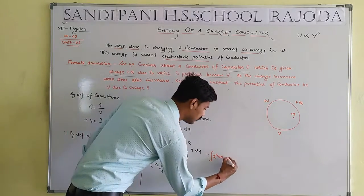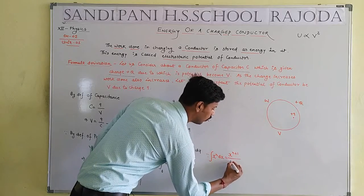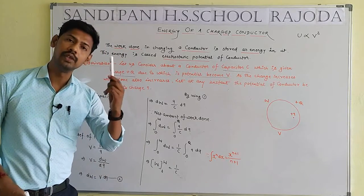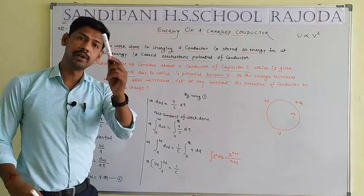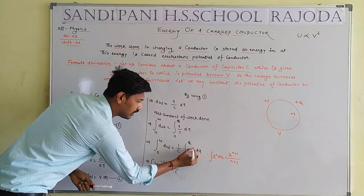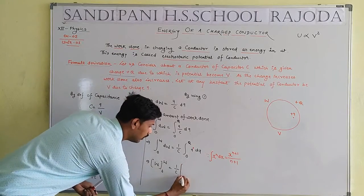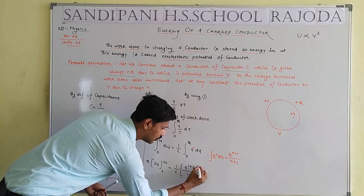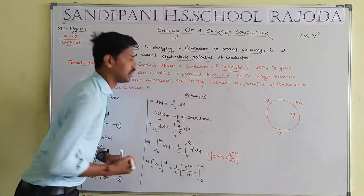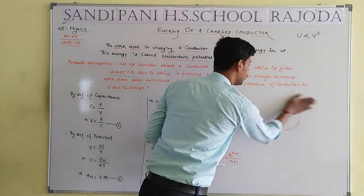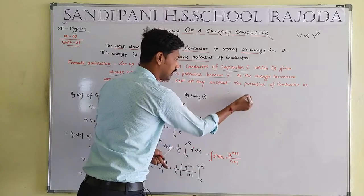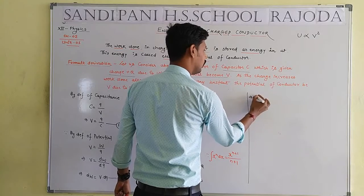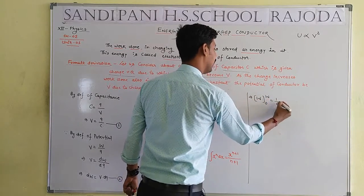The power of Q here is 1. So applying the formula: Q to the power 1+1 divided by 1+1, with limit 0 to Q. That gives Q squared by 2, with limit 0 to Q. So W equals 1 by C multiplied by Q squared by 2, with limit 0 to Q evaluated.